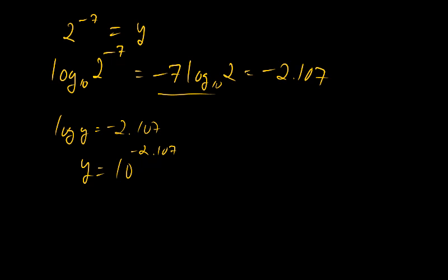I prefer to have things in scientific notation as something times 10 to the something. In order to do that, we'll do the following. We have the 10 to the negative 2 and then we have times 10 to the negative 0.107.